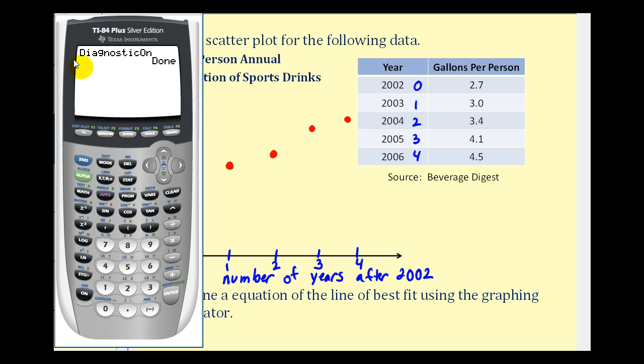So now we'll perform the regression by pressing STAT, right arrow once, and then option four is linear regression. I can scroll down to four or just press the number four. And now I'll press enter. So our line of best fit is y equals .47x plus 2.6. Notice r is approximately .99 and r squared is approximately 98%. So this is a very good model for the given data.